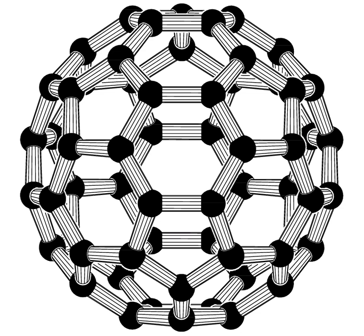Buckminster fullerene is a type of fullerene with the formula C60. It has a cage-like fused ring structure that resembles a soccer ball, made of 20 hexagons and 12 pentagons, with a carbon atom at each vertex of each polygon and a bond along each polygon edge.